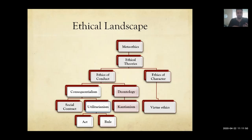We talked about consequentialism. On the map, social contract theory we covered with Hobbes, utilitarianism we covered last week, and this week we're going to cover deontology — that's Kant's version of deontology. Deontology is completely separated from consequentialism, which should tell you deontology is not about the consequences of your actions.